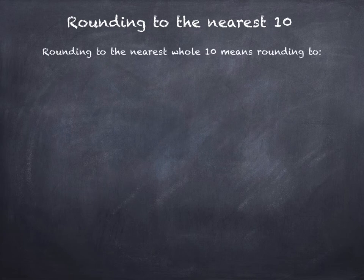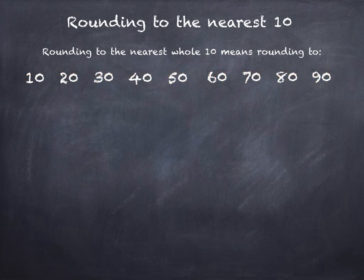Rounding to the nearest 10 means rounding to these numbers: 10, 20, 30, 40, 50, 60, 70, 80 and 90.